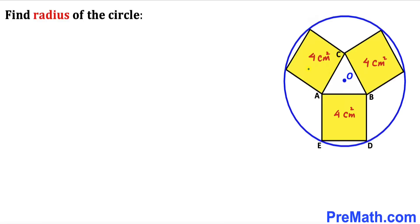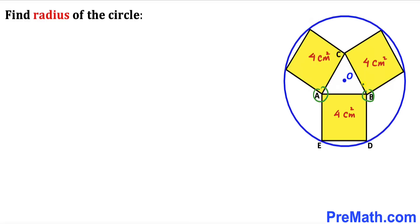Welcome to pre-math. In this video we have three identical squares fully inscribed in a circle with center O, such that the area of each yellow square is 4 centimeter square. Points A, B, and C are the points of contact of these squares, and we are going to calculate the radius of this circle.